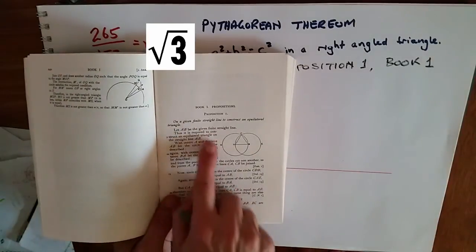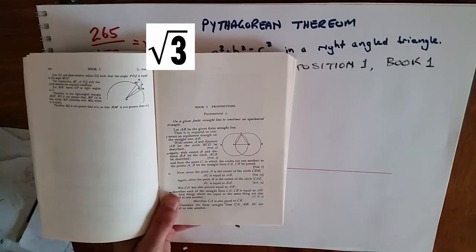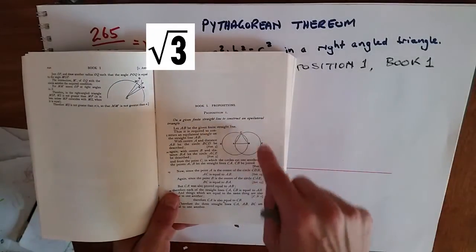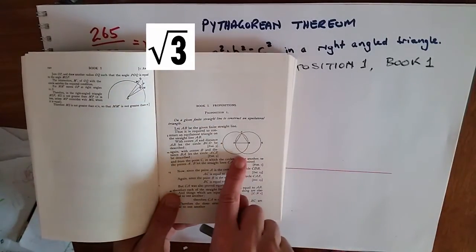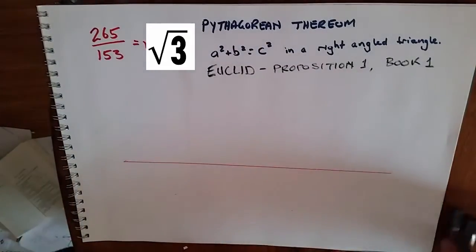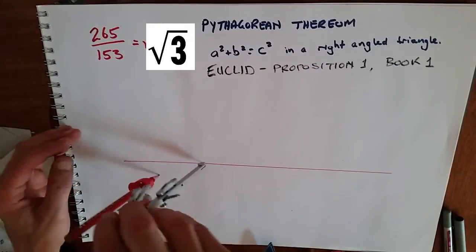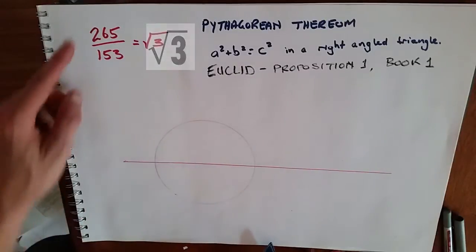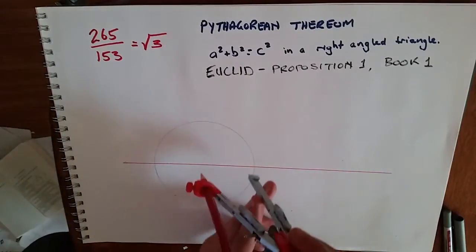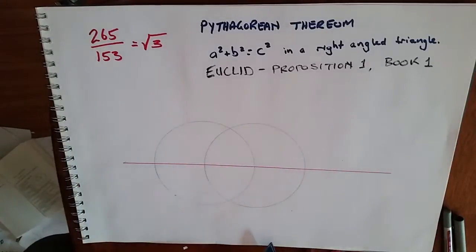Euclid Proposition 1, Book 1, vesica piscis will create an equilateral triangle. We can also create a larger one from C down to that point over to E, but we're going to draw a door of E. We're going to find the square root of three, essentially proving that the ratio of the rhombus inside is 265 over 153.